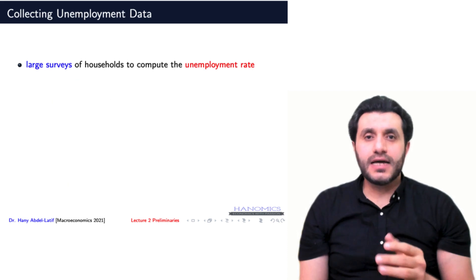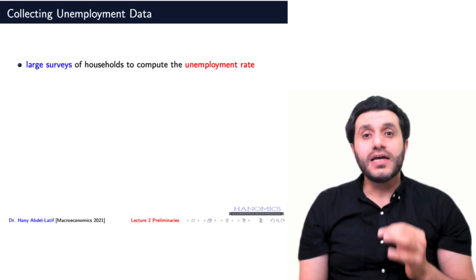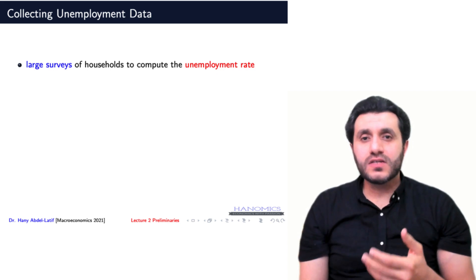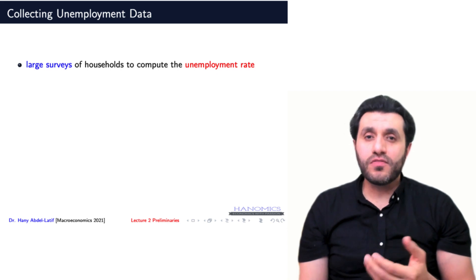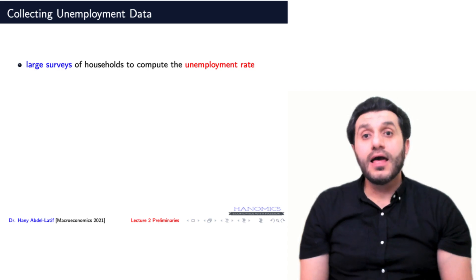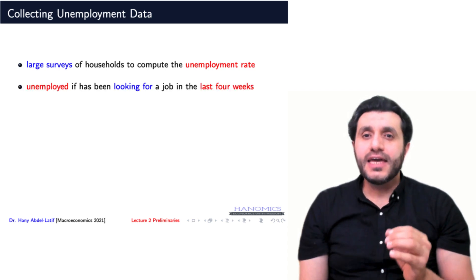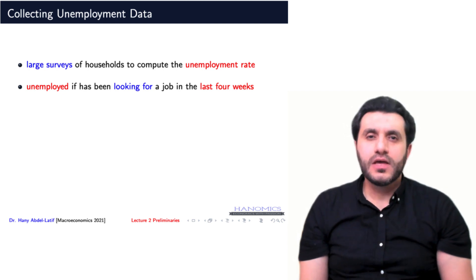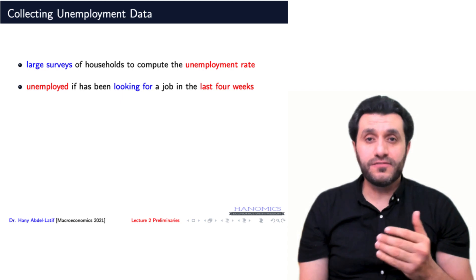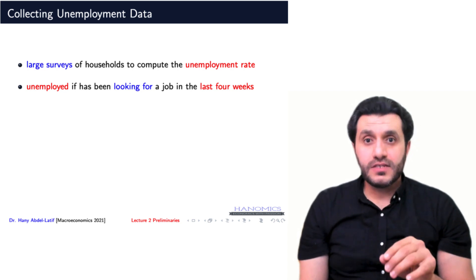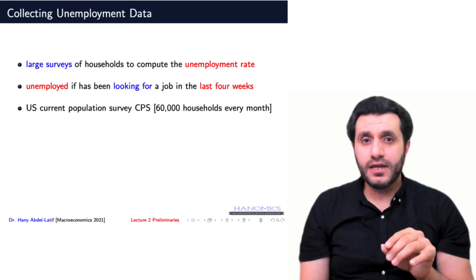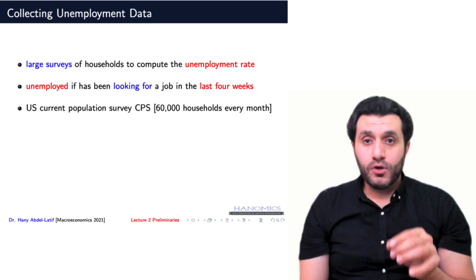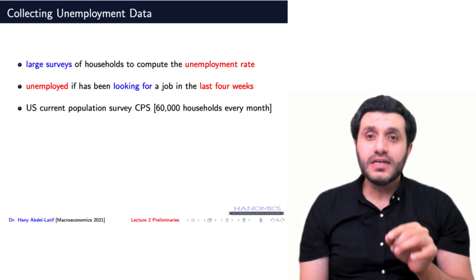How do we collect data to calculate the unemployment rate? It is usually the case that unemployment statistics are collected through extensive household surveys, including several questions on job status — for example, whether they have a job or not, and whether they have been looking for a job and for how long. An individual of working age is unemployed if they do not have a job and have been actively looking for one for the last four weeks. This household survey is known as the Current Population Survey, and they interview 16,000 households in the United States every month. The unemployment rate in the US is calculated based on the monthly CPS survey data.